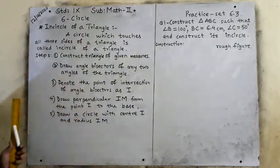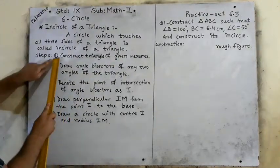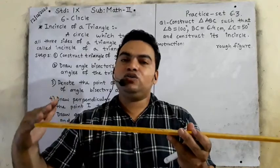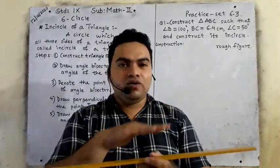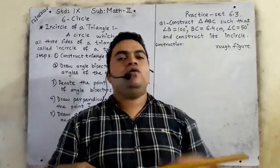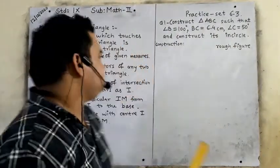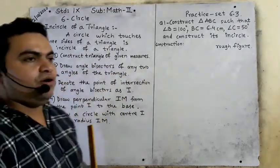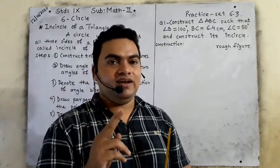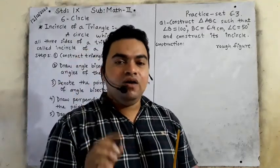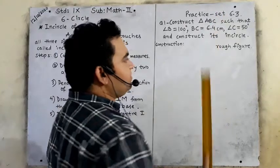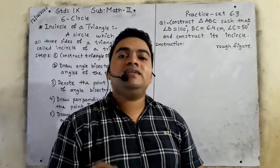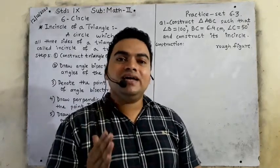Now we will see the steps — how to draw incircle of a triangle. Step number 1: construct triangle of given measures. Always first we will draw the base of a triangle, then the two angles will be given. We will draw angle 1 and angle 2; they will intersect each other at a point. Then we will draw angle bisectors of any two angles of the triangle. Always remember: whenever the word 'incircle' comes, it means we have to draw a circle inside the triangle, and for incircle we will do angle bisectors.